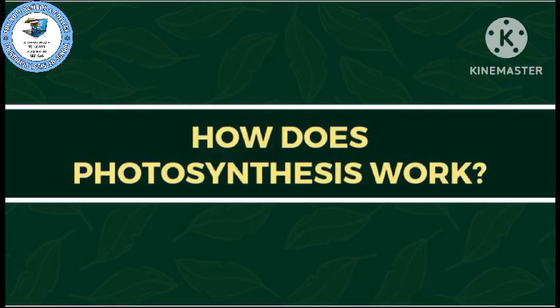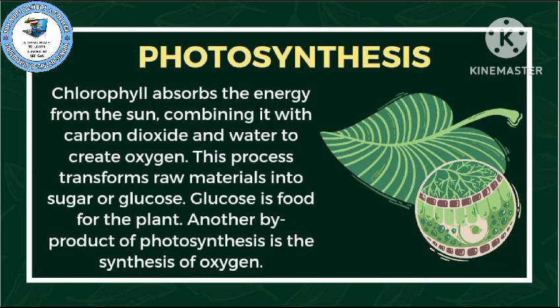How does photosynthesis work? Chlorophyll absorbs the energy from the sun and combines it with carbon dioxide and water to create oxygen. This process transforms raw materials into sugar, or glucose. Glucose is the food for the plant.